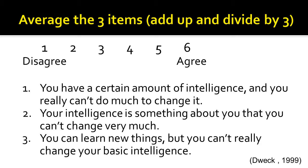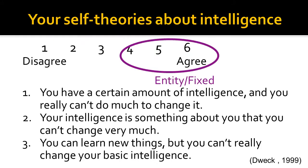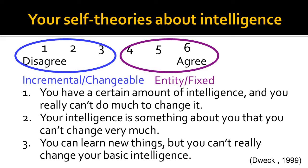If your average was above a 3.5, then you have an entity or fixed view of intelligence. If your average was below a 3.5, then you have a view of intelligence that is called incremental or changeable.